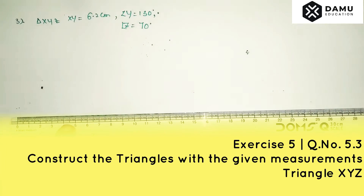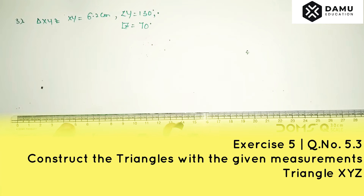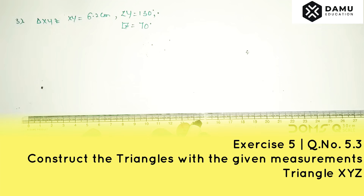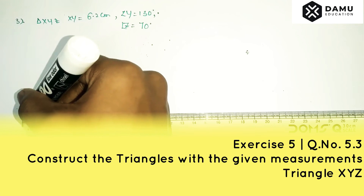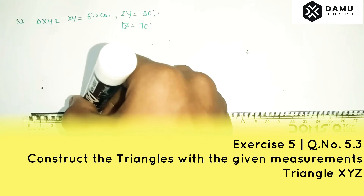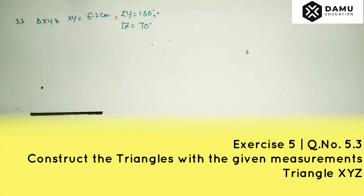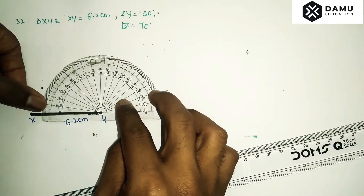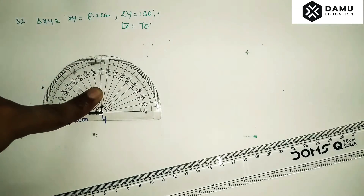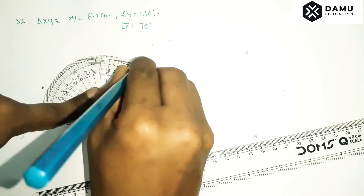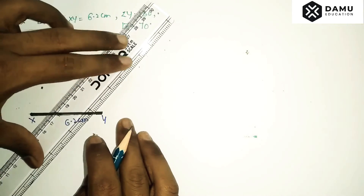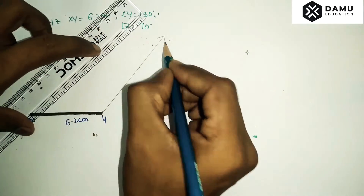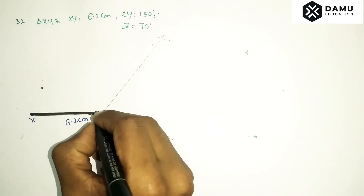First, draw one line segment with 6.2 centimeters — that is XY, so XY equals 6.2 centimeters. Then angle Y equals 130 degrees. Take your protractor, coincide the left side, and measure from the left side. For 130 degrees, draw one ray from Y.